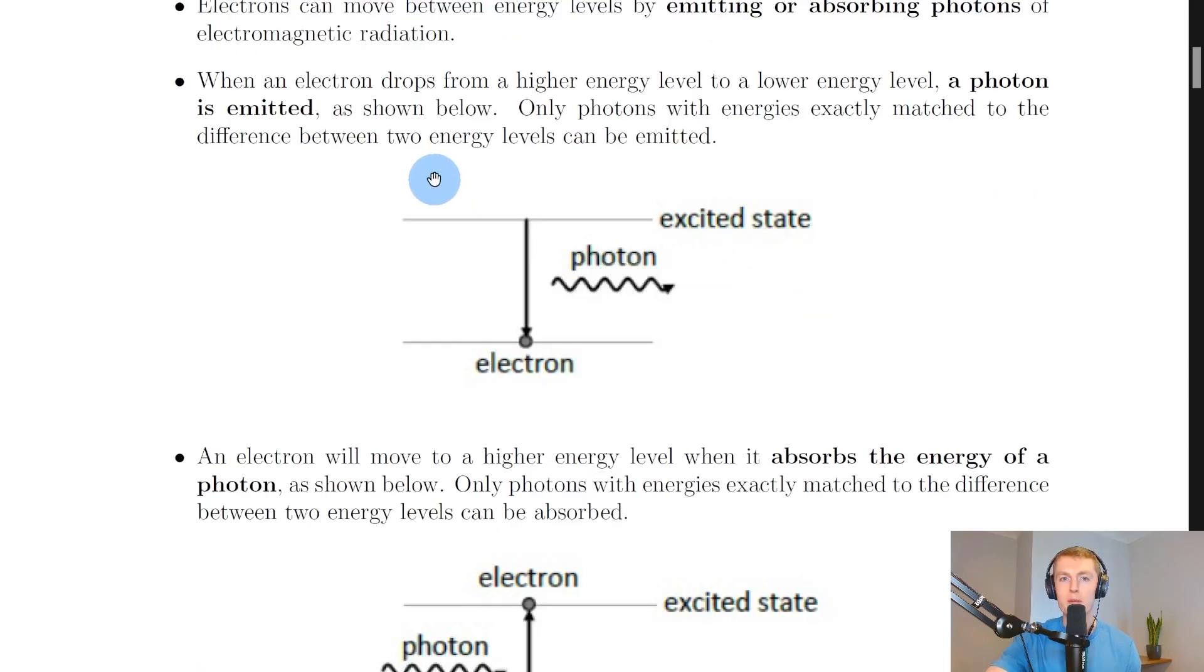So firstly we have photons being emitted. When an electron drops from a higher energy level to a lower energy level, a photon is emitted as shown below. Here's your electron starting in an excited state, a higher energy level, and if it drops to a lower energy level then it's going to emit energy in the form of a photon. Only photons with energies exactly matched to the difference between two energy levels can be emitted.